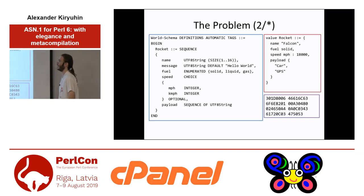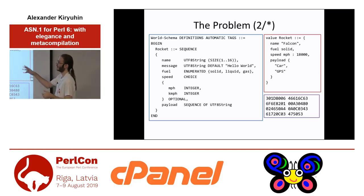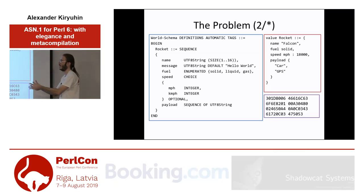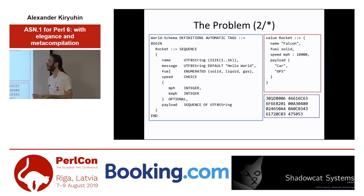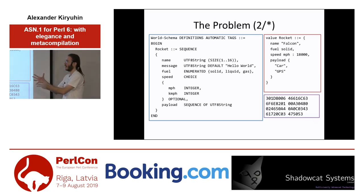The first part is a generic language for type descriptions, and there are various sets of rules for encoding and decoding those types. On the left you see an example of a type described using the ASN.1 specification language. A rocket is a sequence of some other fields — we have a name, it is a string, and payload is a sequence of UTF-8 strings. And a fuel is an enumerated value. You can define recursive types, you can define a lot of custom types and work with them.